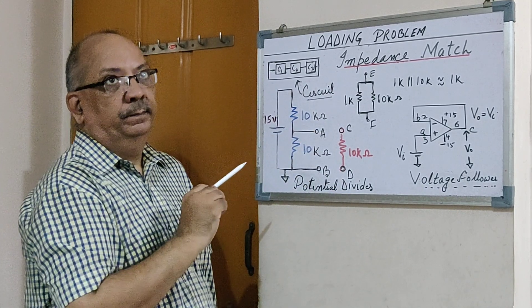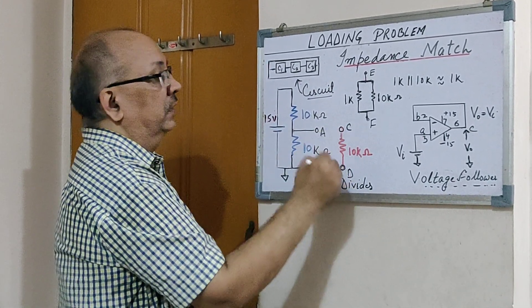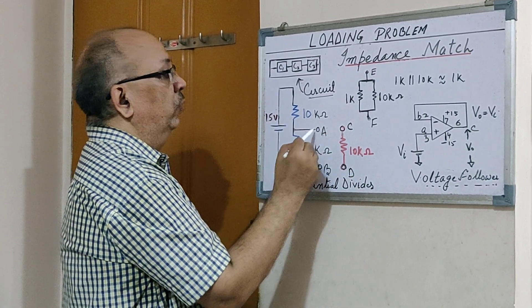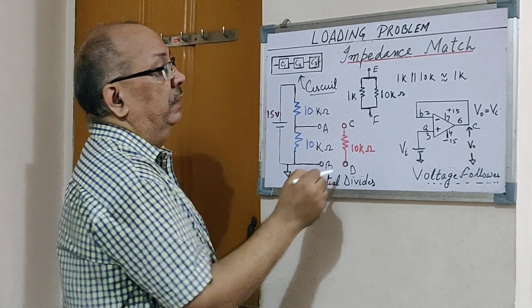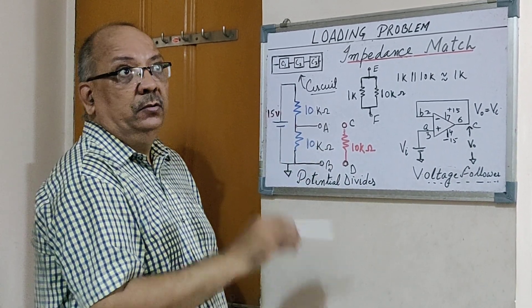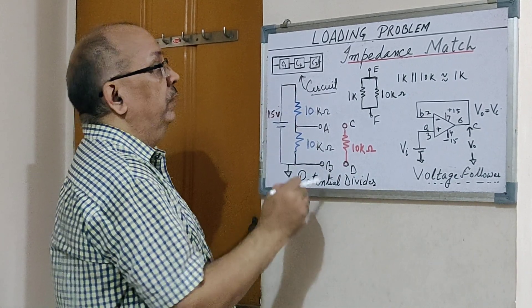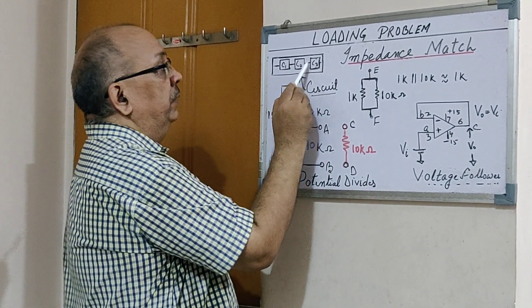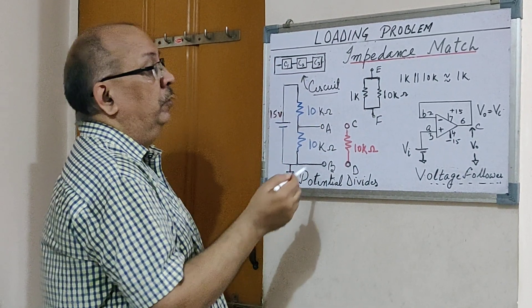voltage across AB was 7.5 volts, and the moment you connect it, it drops to 5 volts. This is called loading problem, and it's a frequent problem whenever there is an interface between different subcircuits. The question is, how can it be solved? If you see this example here, 1k parallel to 10k is approximately 1k.